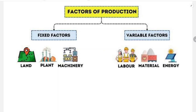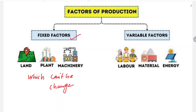Next, we will see another category of factors of production based on time. There are basically two types: fixed factor of production and variable factors of production. Fixed factor of production means the factors which cannot be changed in the short run.